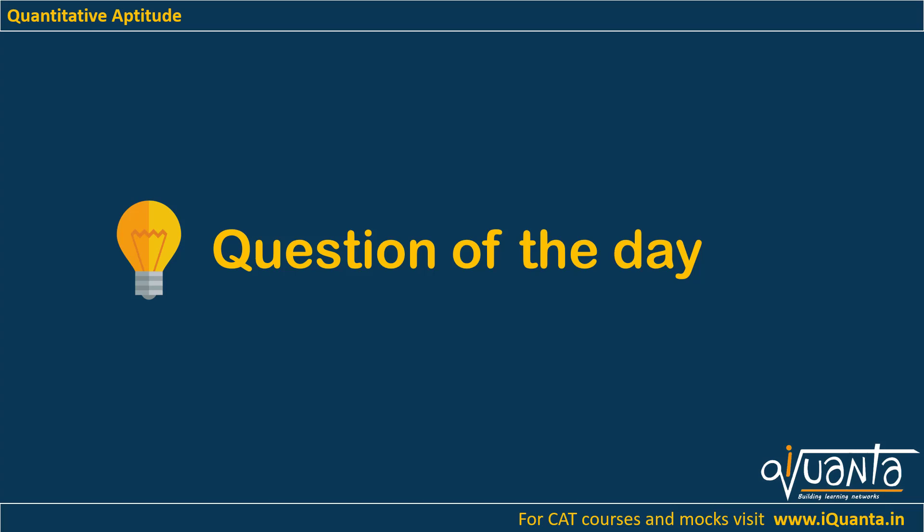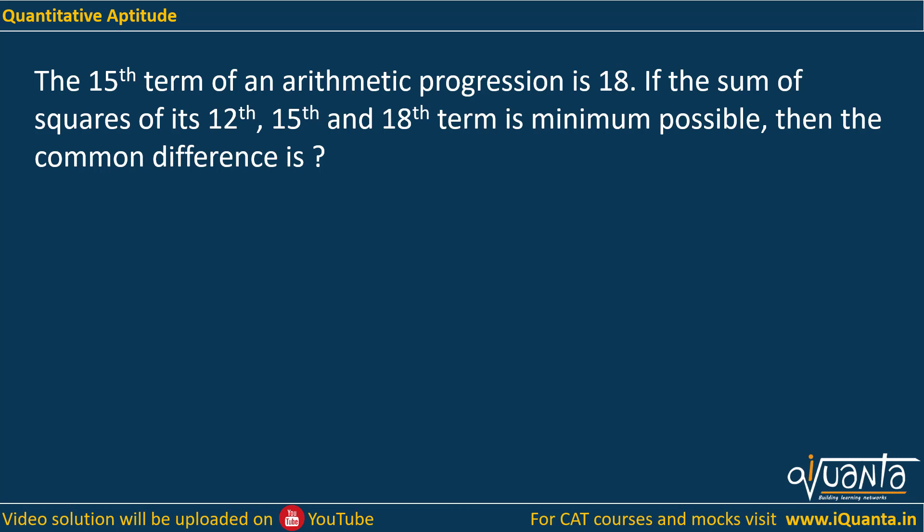Hello everyone, let's try to solve today's question of the day which is based upon arithmetic progression. The question is: the 15th term of an arithmetic progression is 18. If the sum of squares of its 12th, 15th, and 18th term is minimum possible, then the common difference is?